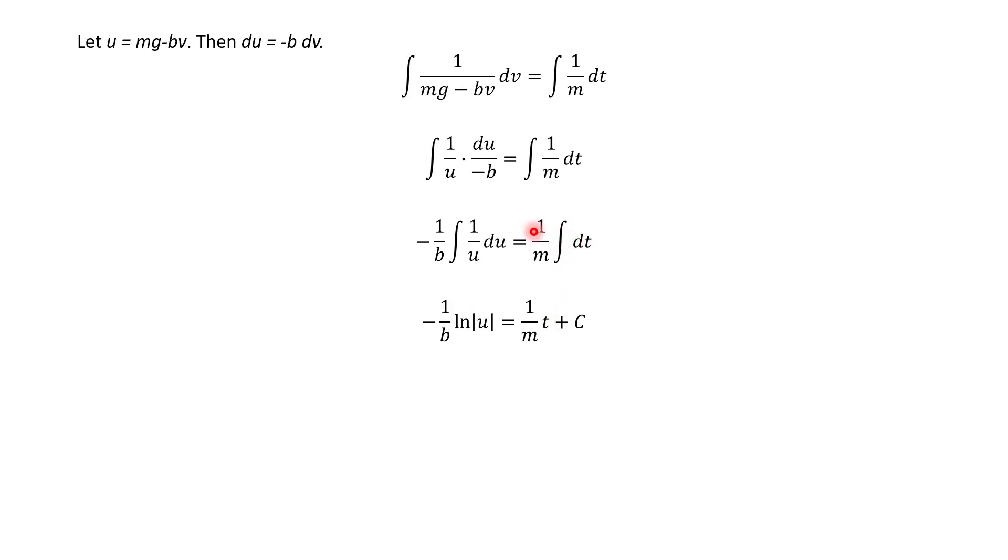We still have our constants in the front, so we put them there. And then there's no limits of integration, so don't forget your constant here, plus c. Alright, so we did our integration, and now I'm just going to replace what u equaled when we had done our u substitution, so mg minus bv.